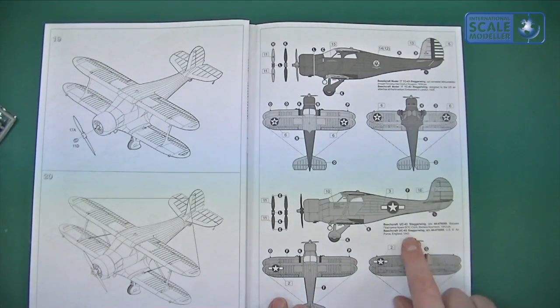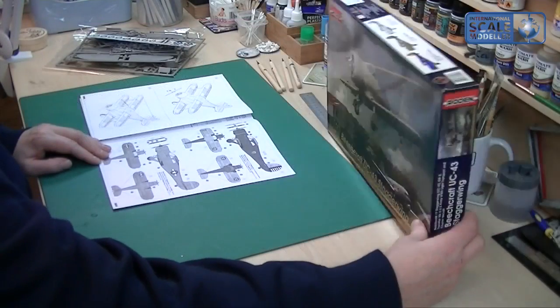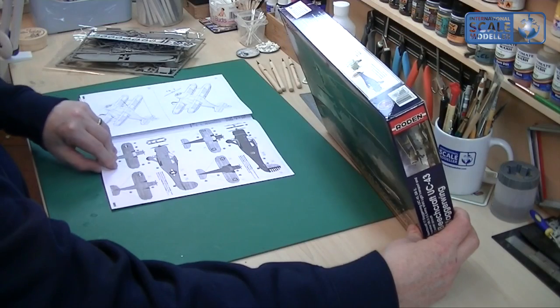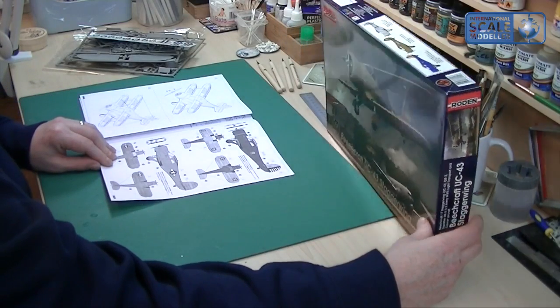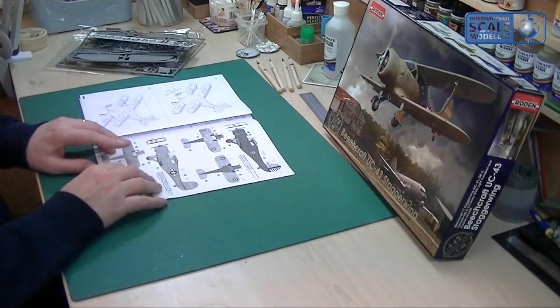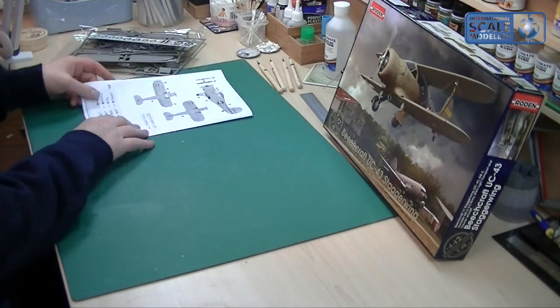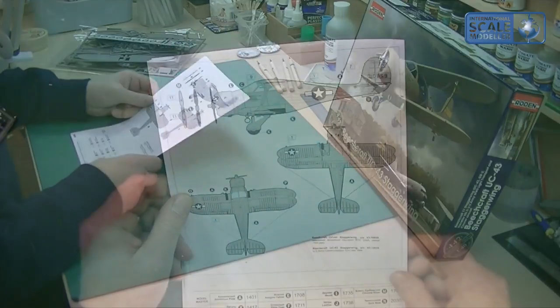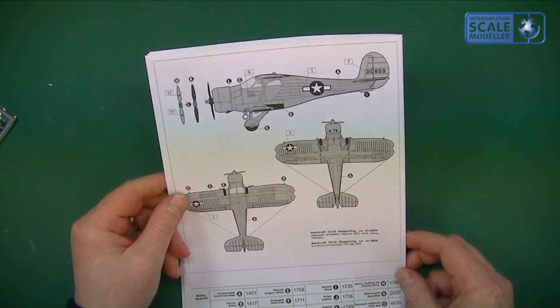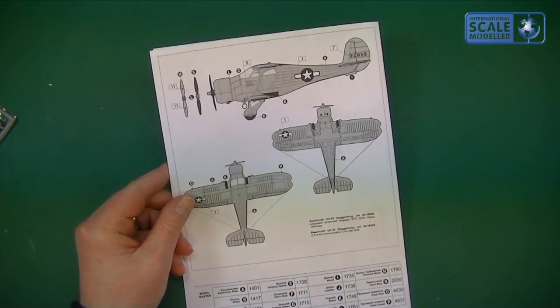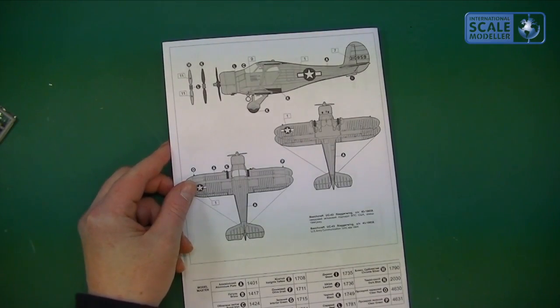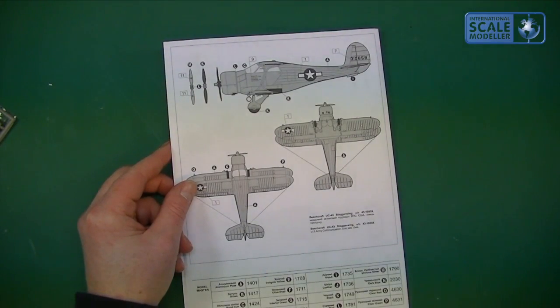Then you've got US Air Force England 1943, and that is going to be the green version. So it's all over like a khaki drab green on the box, the same color.